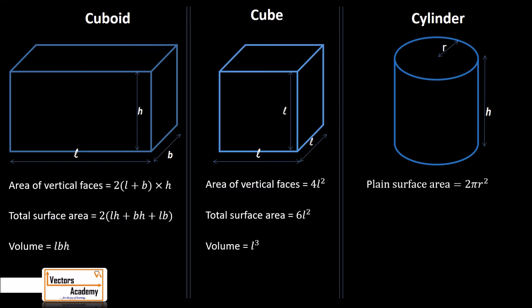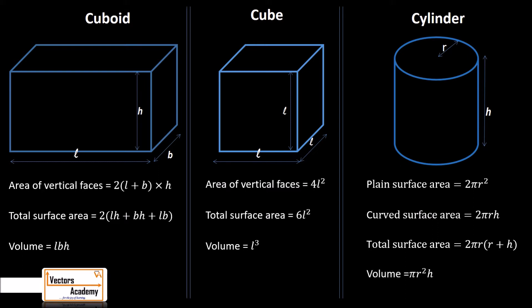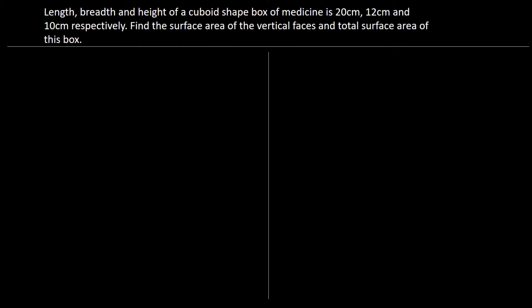For a cylinder we have two dimensions: radius and height. The plane surface area is 2πR². The curved surface area is 2πRH. So the total surface area of a cylinder is 2πR(R + H). Now let us start with our first example.